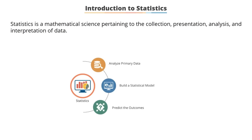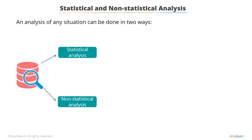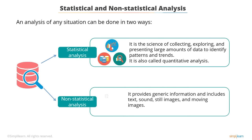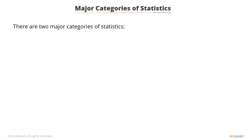and predict the outcomes. An analysis of any situation can be done in two ways: statistical analysis or non-statistical analysis. Statistical analysis is the science of collecting, exploring, and presenting large amounts of data to identify the patterns and trends. Statistical analysis is also called quantitative analysis. Non-statistical analysis provides generic information and includes text, sound, still images, and moving images, and is also called qualitative analysis.